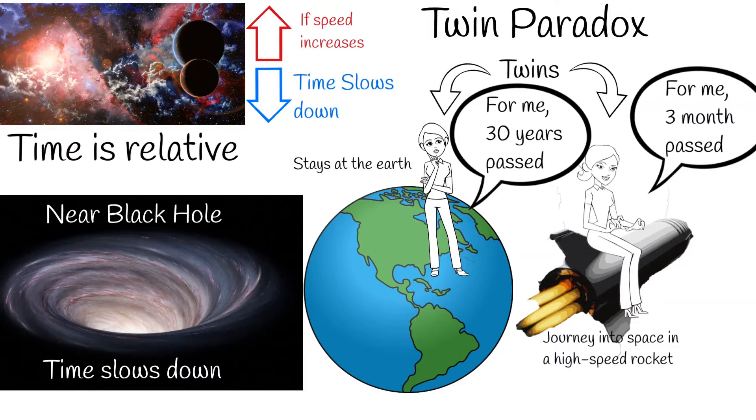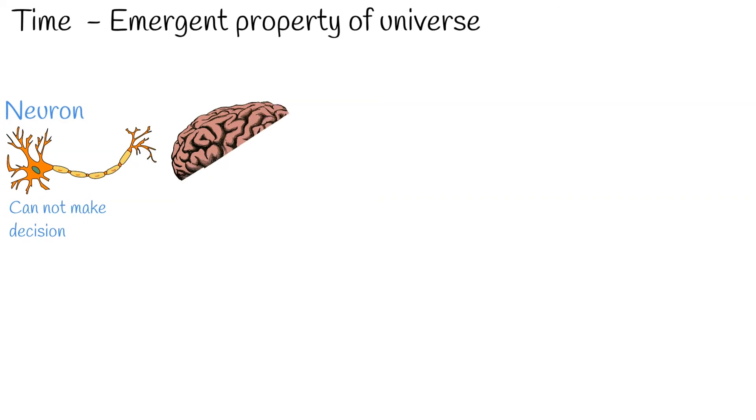Many physicists think that time is just an illusion and it does not exist at the fundamental level. Some of them think that time is emergent property of universe. Emergent property are things that don't exist in individual pieces of a system, but they exist for the system as a whole.